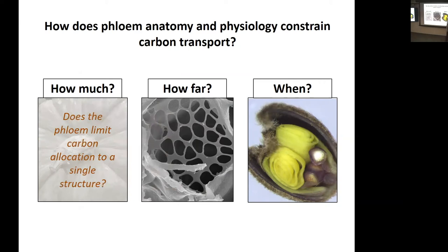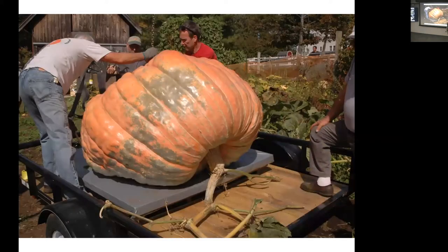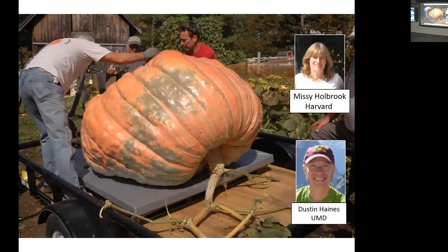I got interested in what happens when a plant allocates a lot of carbon really rapidly to one developing structure. I didn't look at just any pumpkin — I wanted to find the biggest ones, so I worked on giant pumpkins. I had the pleasure of working with the New England giant pumpkin growers, and did this work in collaboration with Missy Holbrook and Dustin Haynes.